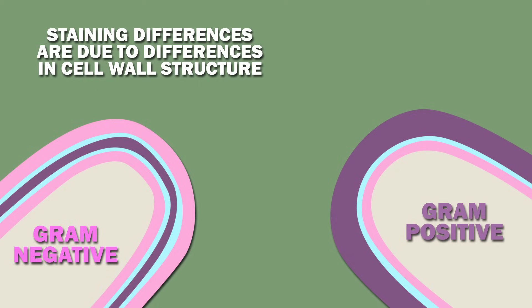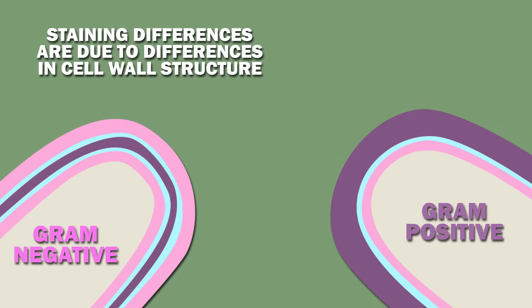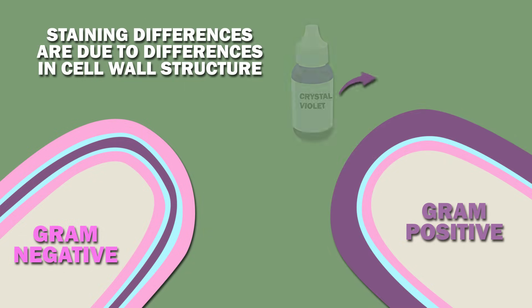The reason for these staining differences is due to differences in cell wall structure, which is the chief difference between gram-positive and gram-negative bacteria. The gram stain detects peptidoglycan, and since gram-positive bacteria have a thick, multilayered peptidoglycan layer, they retain the crystal violet dye.